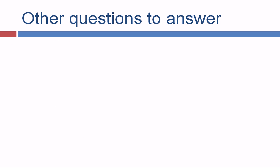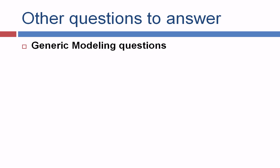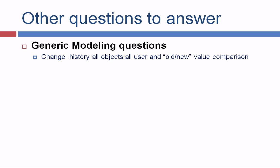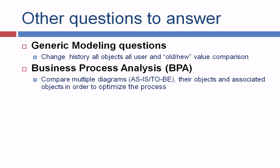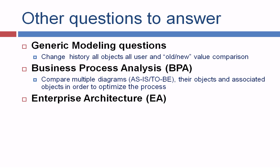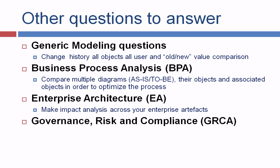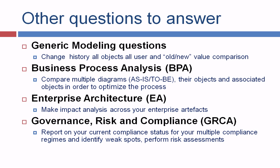What other questions can we answer with this type of reporting? For generic modeling questions, we can track change histories — what objects were changed, comparing old and new values. For business process analysis, we can compare multiple diagrams and scenarios such as as-is and to-be, and compare their associations. For enterprise architecture, we've just seen the impact analysis for enterprise artifacts, useful for business continuity. For governance, risk, and compliance, you can report on current compliance status across multiple compliance regimes, identify weak spots, and perform risk assessments. There is a wide variety of usage for this type of reporting.